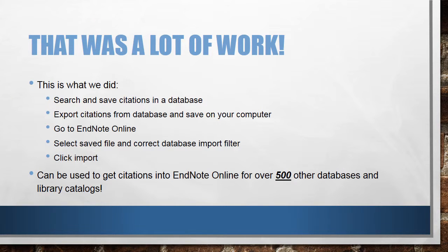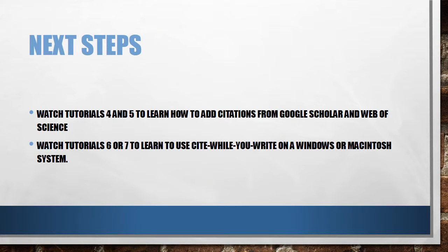That is a lot of work. However, these steps of searching, saving citations in your database, exporting those citations and saving them onto your computer, going into EndNote, selecting the saved file and the correct database import filter, and clicking Import, can be used to get citations from over 500 other databases and library catalogs into EndNote Online. I know this is hard to do the first time, but it gets easier as you practice. Our next tutorials in this series cover adding citations from Web of Science and Google Scholar. If you only need citations from PubMed, skip to tutorial 6 or 7 to learn to use Cite While You Write on a Macintosh or Windows computer.